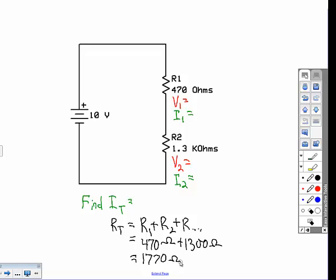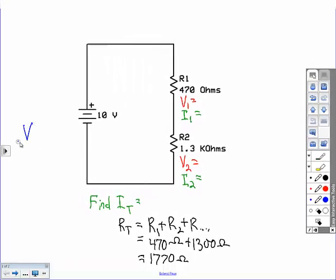Once we know the total resistance, we can calculate the total current because we also know the voltage. And to do that, we're going to use Ohm's law. Ohm's law, remember, is voltage equals current times resistance, and it tells us what to do if we need to find any of those values.